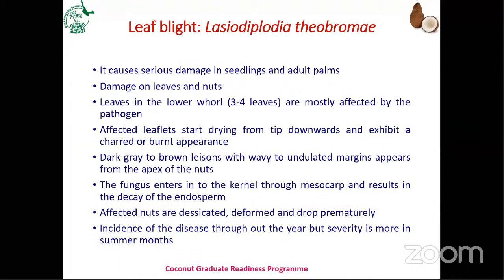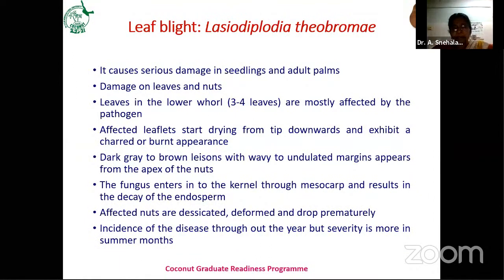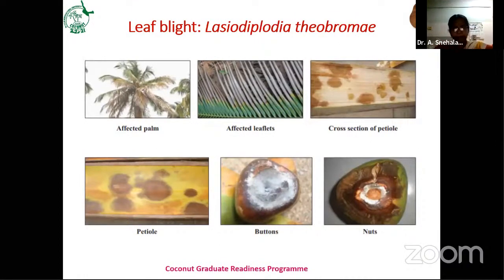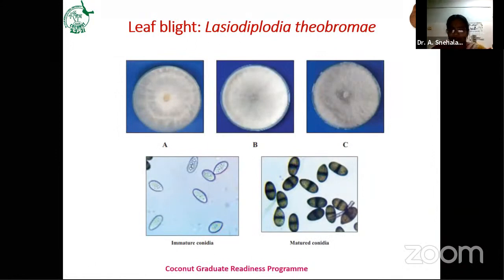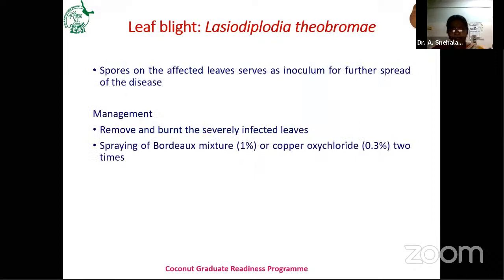This is leaf blight caused by Lasiodiplodia theobromae — a very severe problem in Karnataka and Tamil Nadu. Recently, Neeraja detected the appearance of Lasiodiplodia theobromae in Andhra Pradesh too. Symptoms include infection from the leaflet tip moving downward to the midrib, drying of entire leaflets, necrotic areas, and infection of the petiole and buttons also. Management is removal and burning of severely infected leaves, and application of Bordeaux mixture at 1% or copper oxychloride at 0.3%.